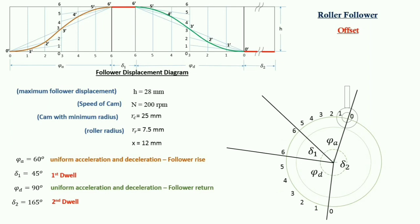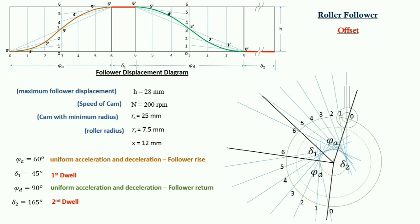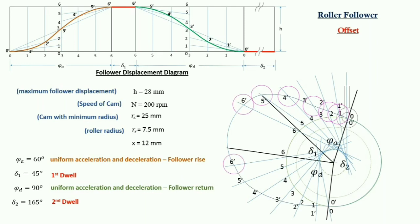Now we draw lines tangent to the offset circle passing through the points, since this is the offset position of the follower. Similarly for phi D, we draw lines tangent to the offset circle passing through the points. We then mark the displacements on each line from 0' to 6' for the angle of ascent, and from 6' to 0' for the angle of descent, and join all the points. Finally, we draw a roller circle of radius 7.5 mm on each point and draw a tangent curve to all the circles.